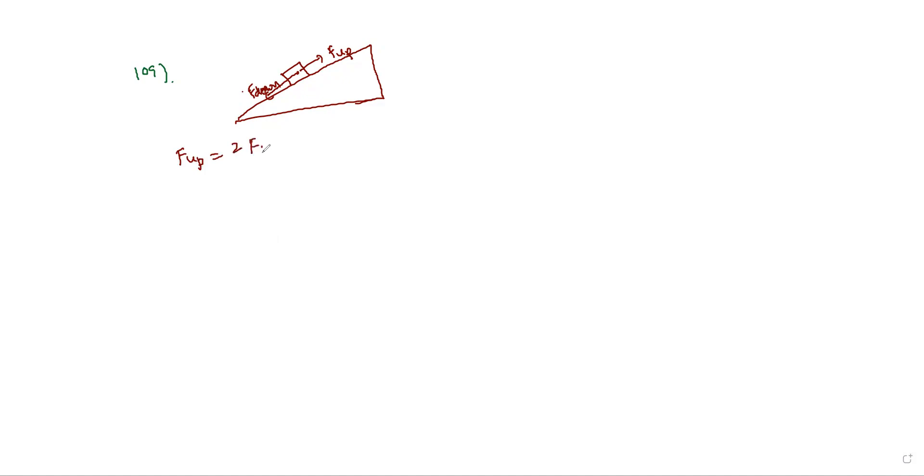F upwards equals two times F downwards. F upwards, the formula is mg into sin theta plus mu into cos theta. And F downwards is mg into sin theta minus mu cos theta.